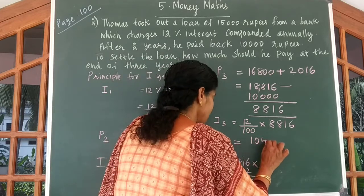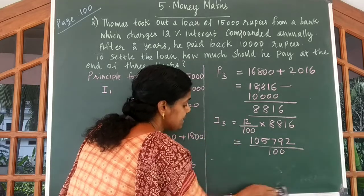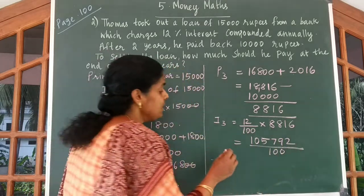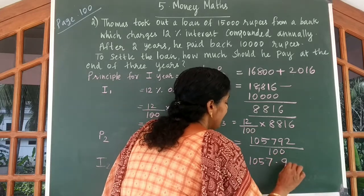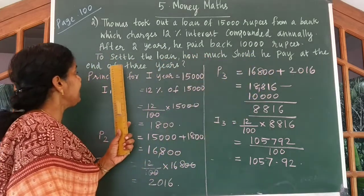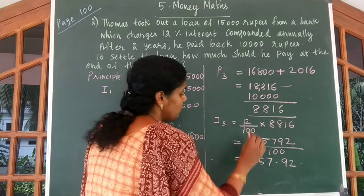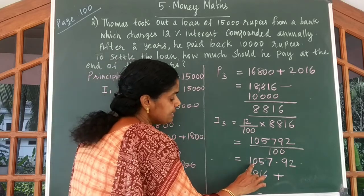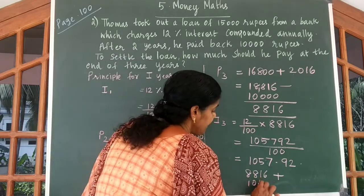The result is 105,792 divided by 100. Since the number is divided by two zeros, we keep the decimal point before two digits. So the interest is ₹1,057.92, which we can write as approximately ₹1,058.